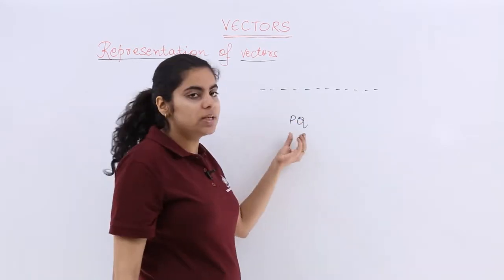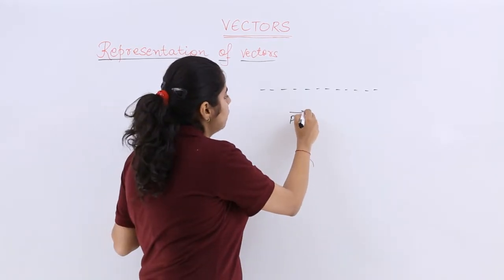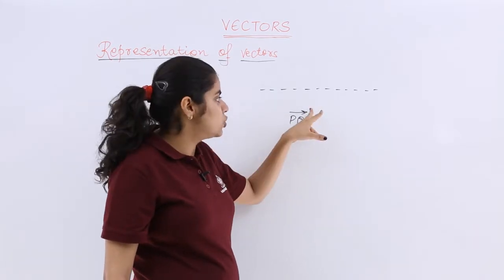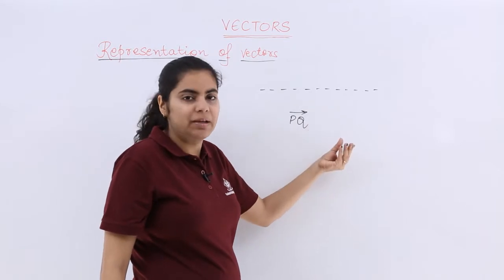Now if I say PQ is a vector, I will show it like this with a directed line segment having an arrow, which means a ray.